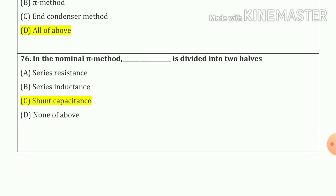Question number 76: in the nominal pi method, shunt capacitance is divided into two parts — the answer is shunt capacitance — option number C.